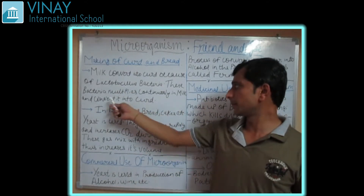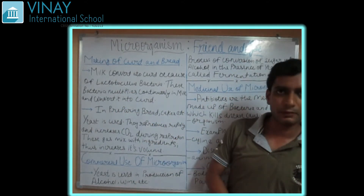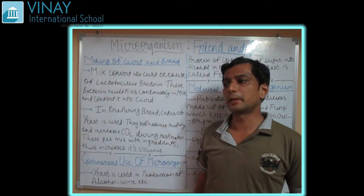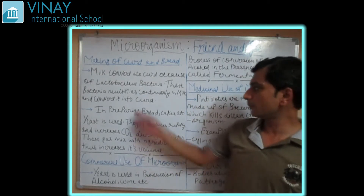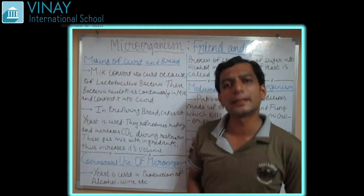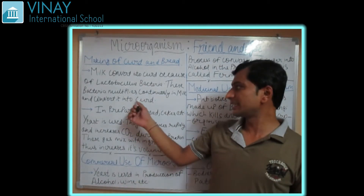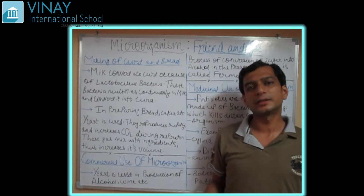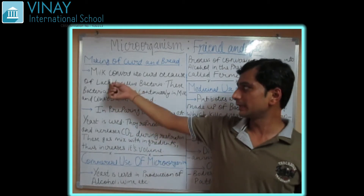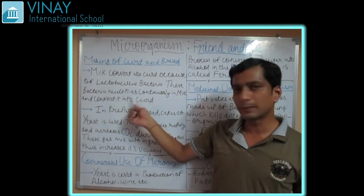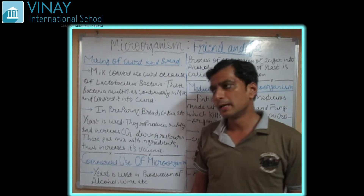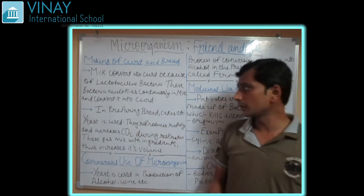Lactobacillus bacteria are very important — they multiply continuously in milk and convert it into curd. Microorganisms generally have very short life cycles, and they multiply very rapidly. Because of this rapid multiplication, they increase in number very quickly, which is why they are able to convert milk into useful products. Here, Lactobacillus converts milk into curd within approximately six to eight hours.